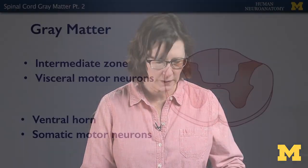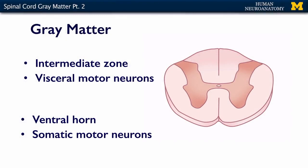In the ventral horn of the gray matter of the spinal cord, we have a couple of different regional differences. In all of the cord, you have a ventral zone which contains alpha motor neurons, and those are the ones that go to your skeletal muscles — they are somatic motor and they innervate skeletal muscle.